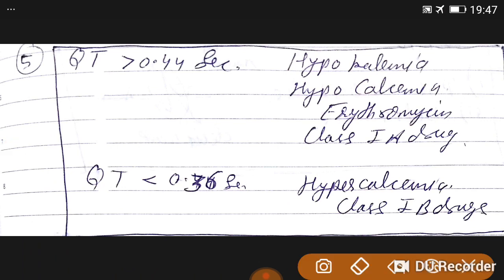Now discuss QT interval. QT normal is 0.36 to 0.44. If it is more than 0.44 seconds, it is mainly found in hypokalemia, hypocalcemia, erythromycin use, and class 1A drug use. If QT is less than 0.36 seconds, it is mainly found in hypercalcemia and class B drugs.